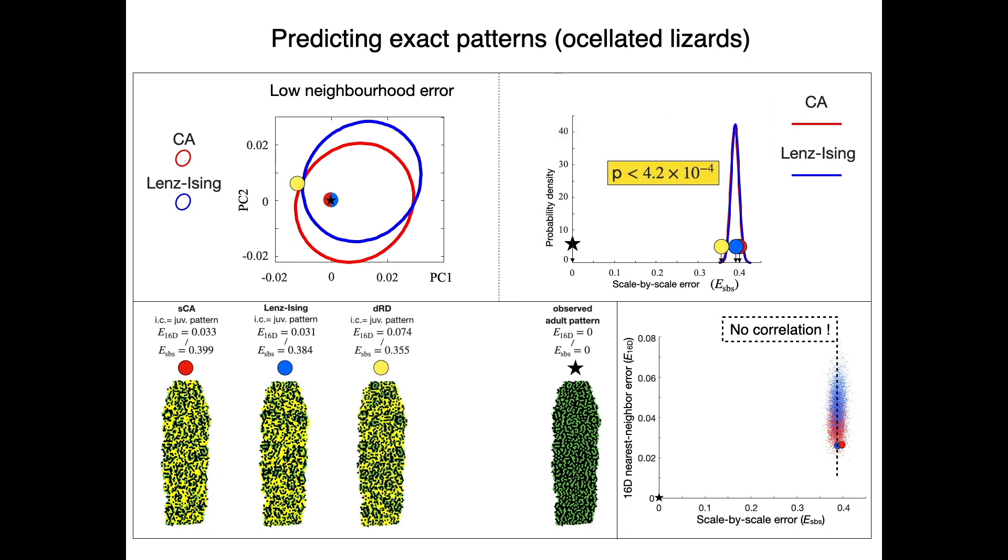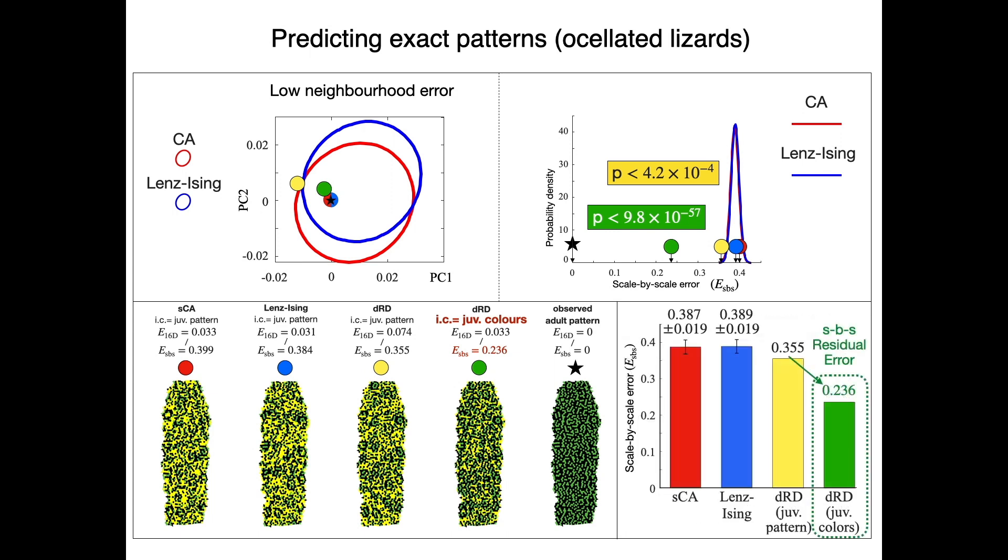On the other hand, RD generates a smaller error, especially when using the juvenile colors. We then sought to identify and quantify the sources of the 24% residual error.